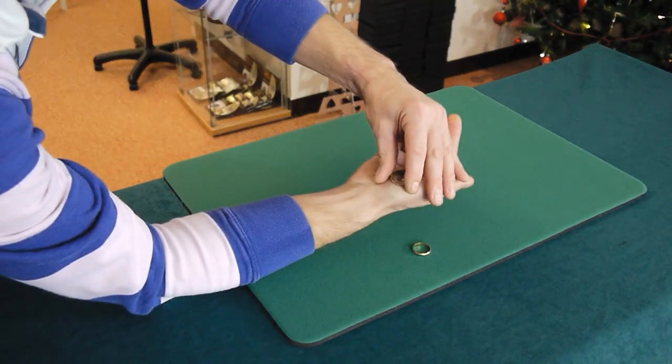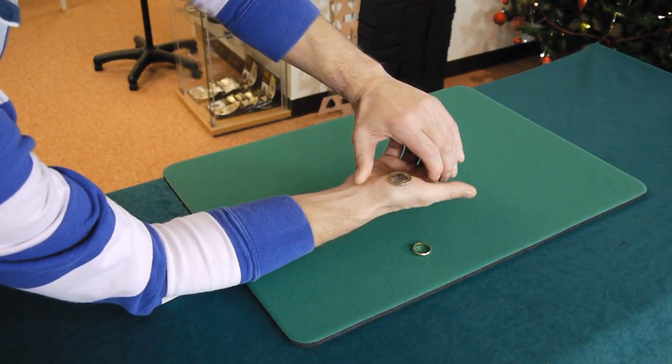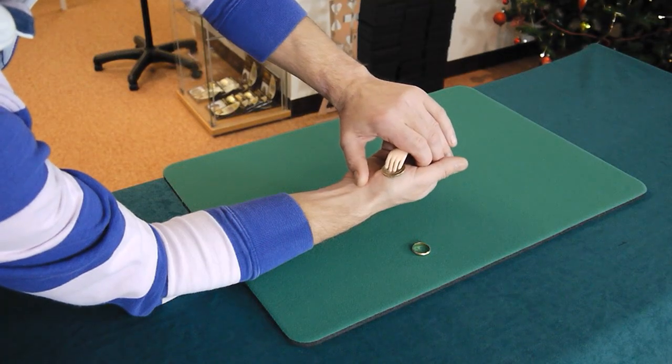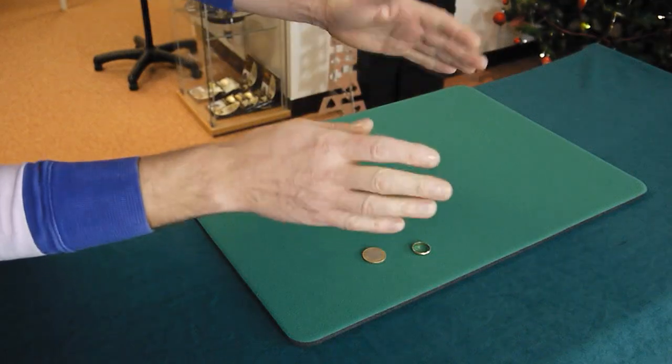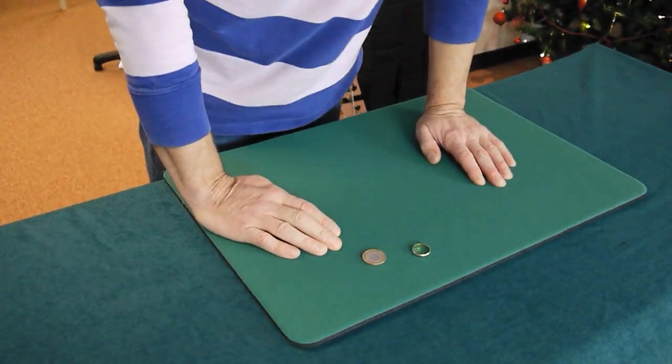It doesn't have to be a ring. No, it can be a coin as well. So we have a coin over here and exactly the same. When you're not looking, my little assistant sneaks out very quietly. He took your coin, puts it inside the envelope or wherever it may be. And that is the secret behind it.